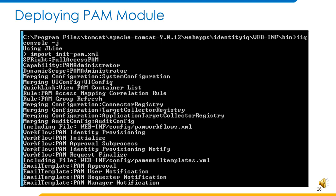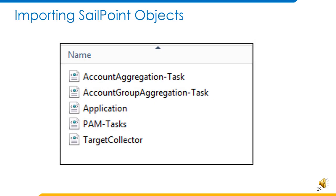Now that CyberArk's SCIM service is published, let us go to the configurations on the SailPoint end. The very first step is deploying the PAM module. This can be done by a simple import of the PAM module, similar to the LCM import in SailPoint, just that the file used here is initpam.xml. Using this command, all the core PAM artifacts shall be deployed into SailPoint. Now that SailPoint is ready with the PAM module, let us go ahead with the installation-specific configurations. After the PAM module import, we are to import certain artifacts or SailPoint objects into the Identity IQ instance.